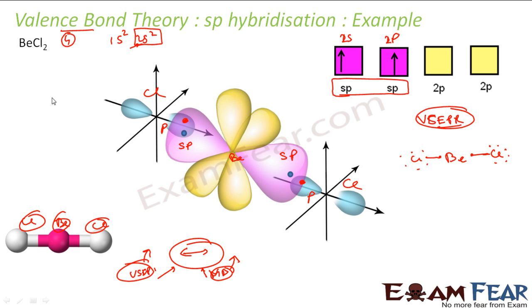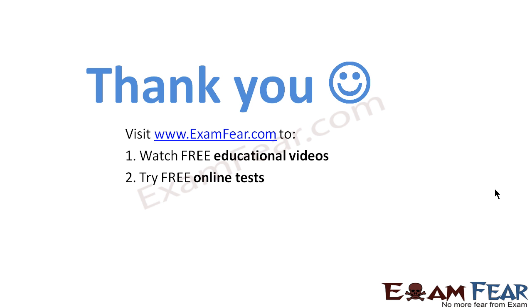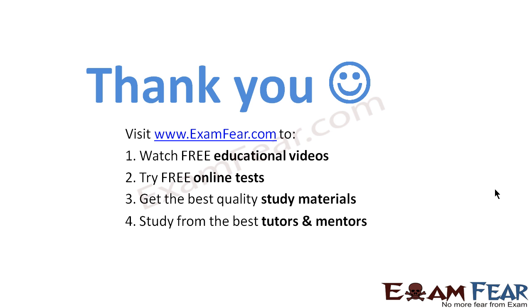With valence bond theory also we can say that this is straight because you see this is a straight thing. You already know that in case of sp hybridization we get linear shape molecule. Thank you. Visit examfear.com to watch free educational videos, try free online tests, get the best quality study materials, study from the best tutors and mentors. Thanks once again.